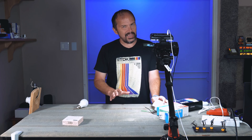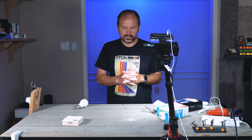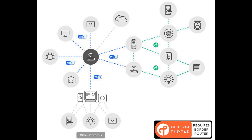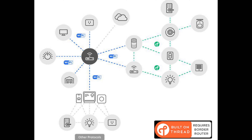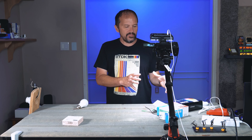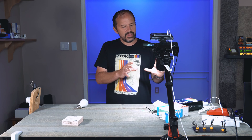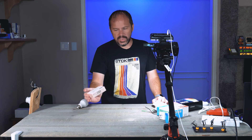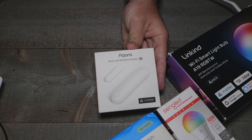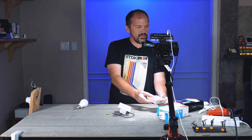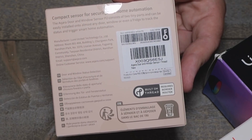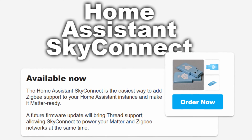I know some of you are asking about Thread. Let's dumb it down: think of Matter like Home Assistant — the glue that puts things together into one app. You've used Zigbee, which is that local mesh protocol. Think of Thread like that. That's where I see things going — Wi-Fi Matter for mains-powered devices, and Thread for battery-powered ones. This Aqara device does say Matter on the box but on the back it says 'built on Thread.'